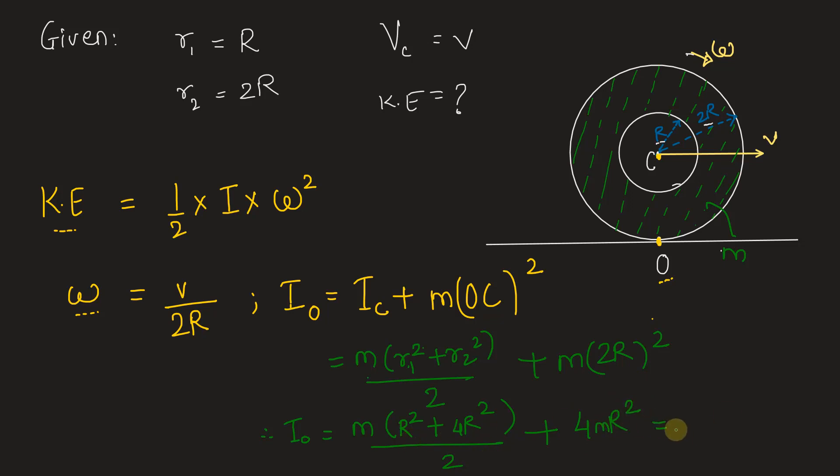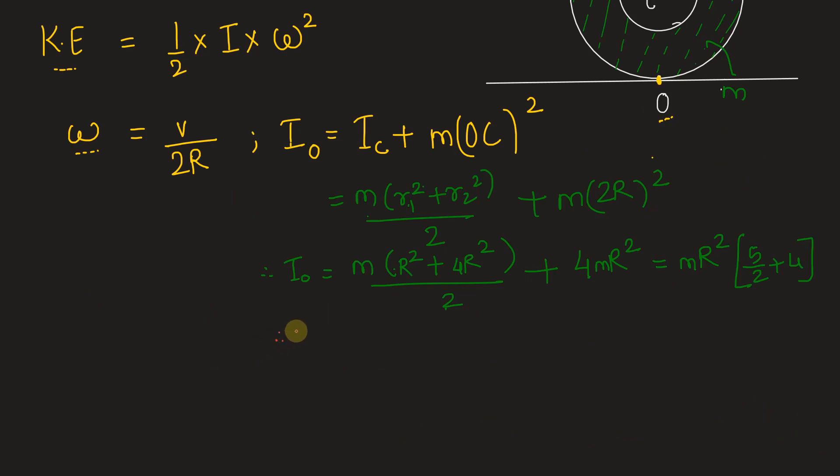Let's take mR square common here. So, m capital R square we have taken common. In the bracket there is 1 plus 4, 5 by 2 and 4. So, we have 5 by 2 plus 4. Therefore, we get IO is equal to this becomes 5 plus 8, 13 by 2.